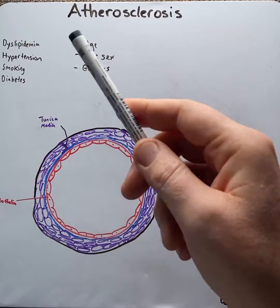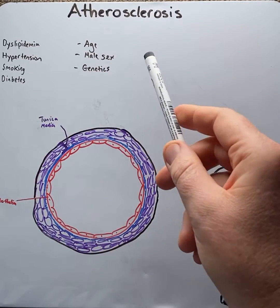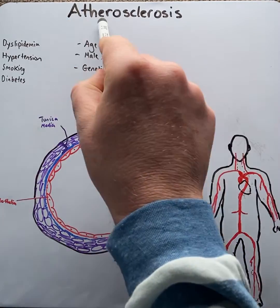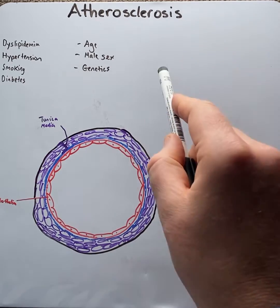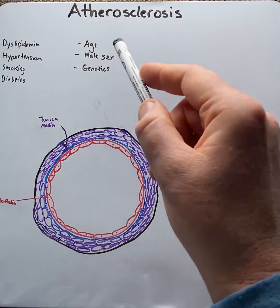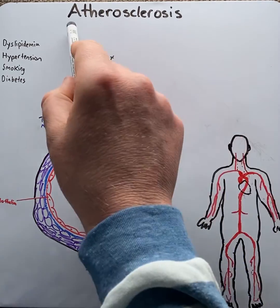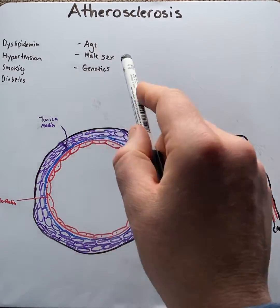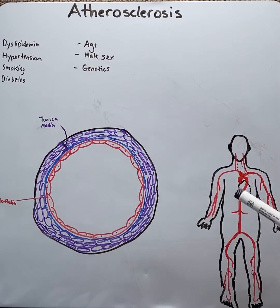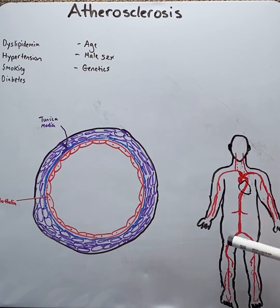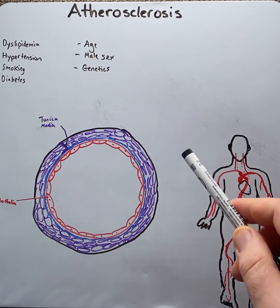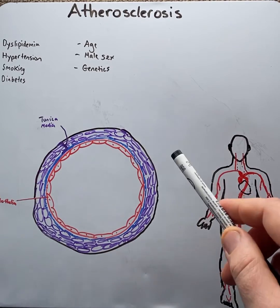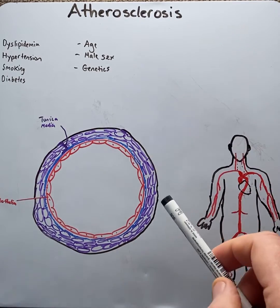The term atherosclerosis is a compound Greek word meaning athero — porridge or gruel — and sclerosis — to narrow or harden. Therefore, atherosclerosis is a pathological process affecting arteries in the body which causes them to harden and narrow by fibro-fatty plaques.